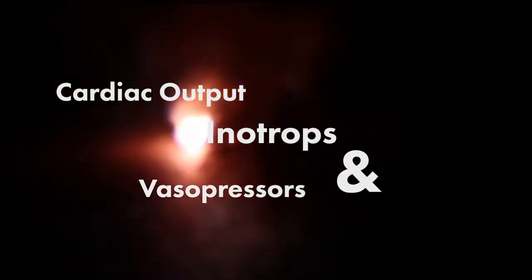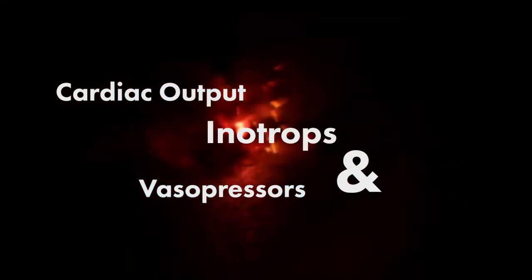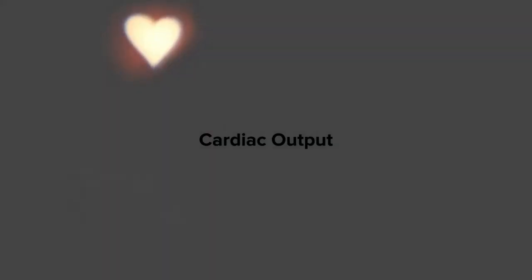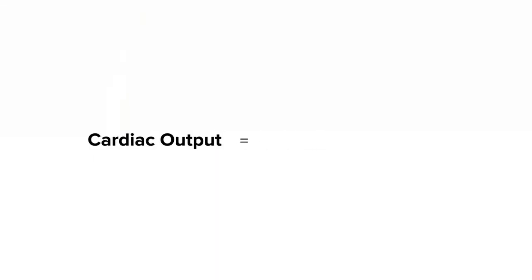This is a lecture on cardiac output, vasopressors, and inotropes. At the level of the heart, your inotropes increase cardiac output. Remember that cardiac output is equal to stroke volume multiplied by heart rate.